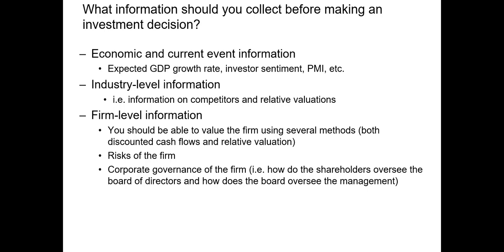Industry level information relates to industry outlook, which comes from a variety of resources — usually industry specific. Finally, we also want firm level information. That includes the risks the firm faces, the characteristics of the firm, and the corporate governance of the firm.